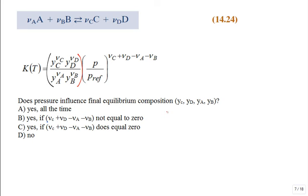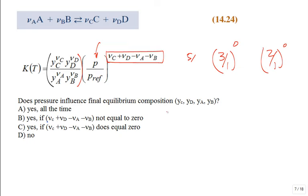If you have a system at two or three atmospheres and you change pressure, it does shift the equilibrium composition. But what happens if this exponent term is equal to zero? I can change P all day. Say it's 3 divided by 1 ATM to the zeroth power — that's 1. Two to the zeroth power is also 1. So when that sum of stoichiometric coefficients of products minus reactants equals zero, pressure does not influence the final equilibrium composition.